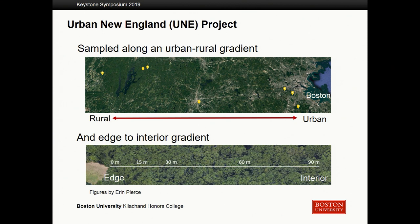The schematic shown here represents my sampling design at any given site. On the far left is a forest edge, and I took soil samples at 0, 15, 30, 60, and 90 meters from that edge, again at each of the seven sites.